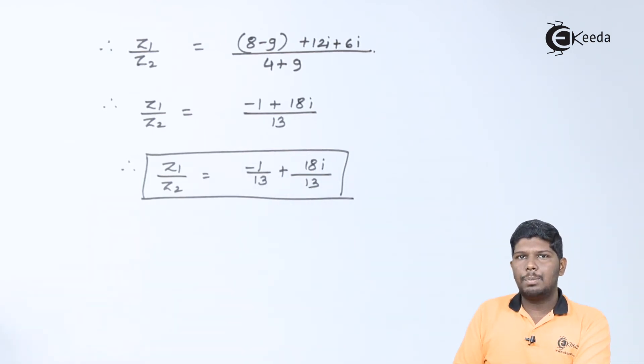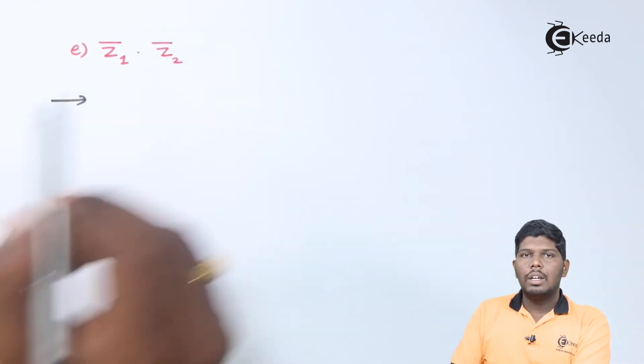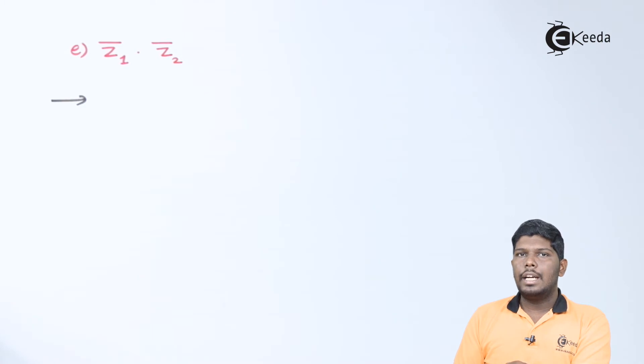Let us see the next problem. In the last case, they are told to find z1 bar into z2 bar. So basically, z1 bar and z2 bar represent conjugates of z1 and z2. What is conjugate? A conjugate is obtained by changing the sign of the imaginary part.